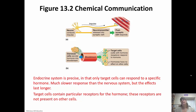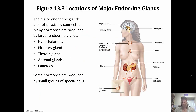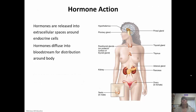The major endocrine glands actually run along the midline of the body. The hypothalamus, pituitary, thyroid, adrenal, and pancreas are some we're going to talk about, along with other small groups of cells that also have endocrine secretions. The hormones are released into the extracellular spaces surrounding the endocrine cells and then diffuse into the bloodstream for distribution.